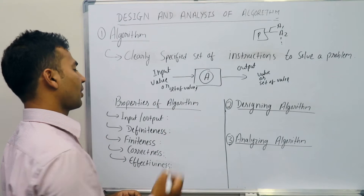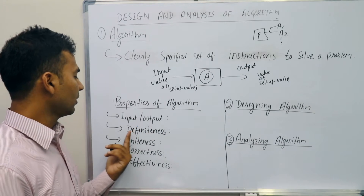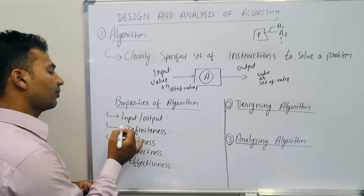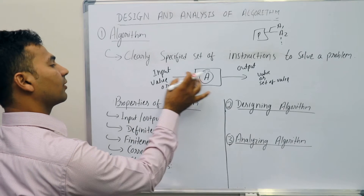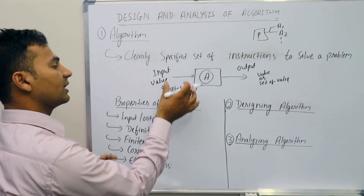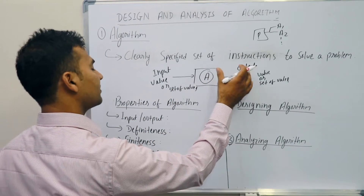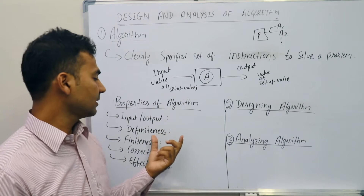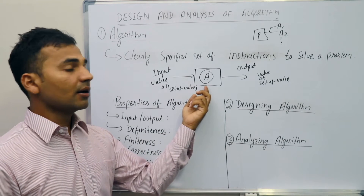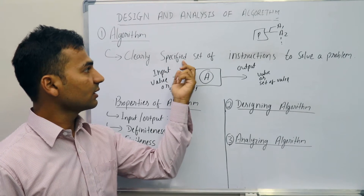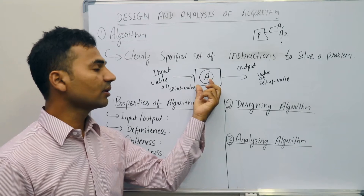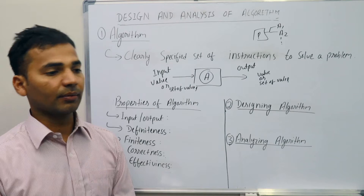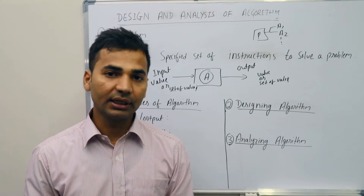Algorithm A has some properties: input-output, definiteness, finiteness, correctness, and effectiveness. The input-output property says that algorithm A takes some input from a specified set of inputs and gives an output when executed. Definiteness says that the steps of the algorithm must be clearly defined and there must not be any kind of ambiguity within the steps.